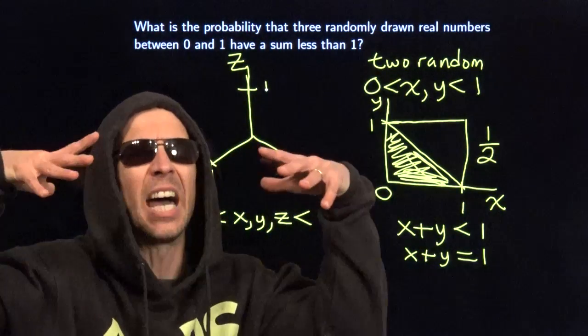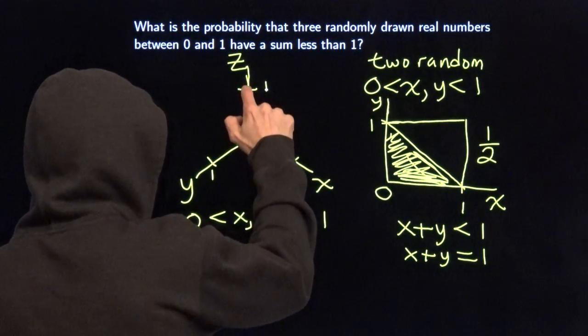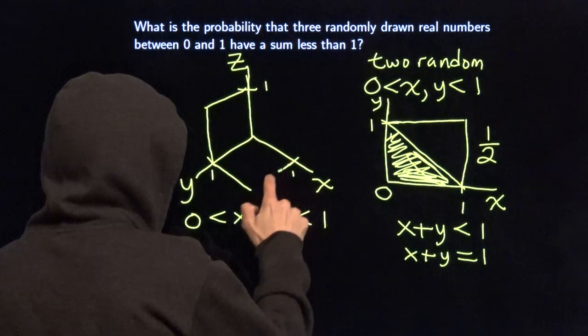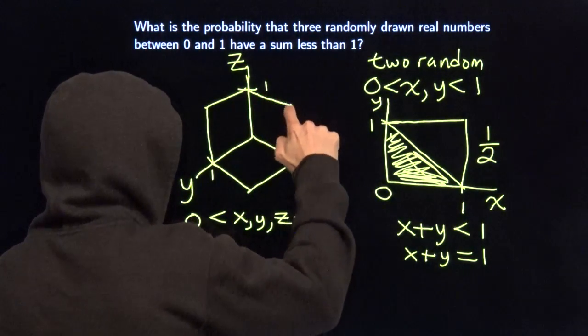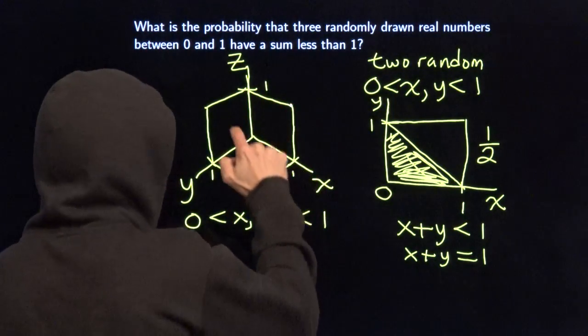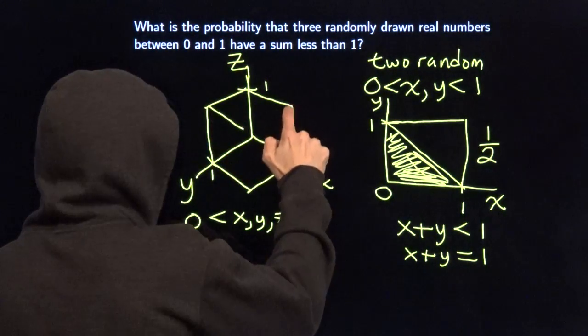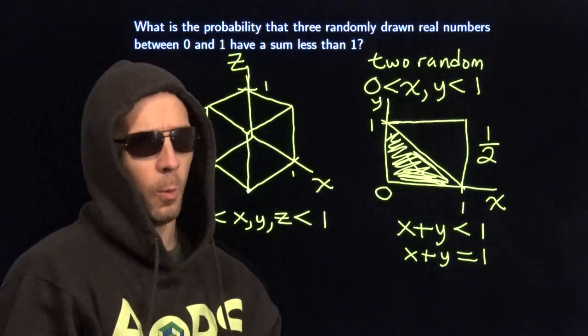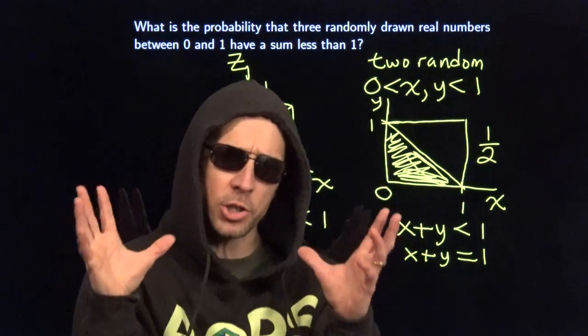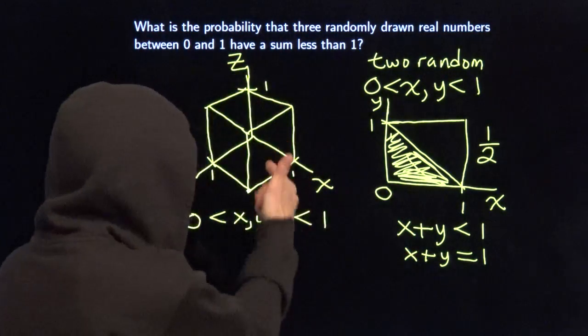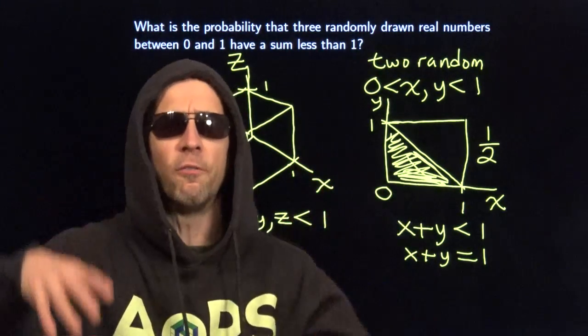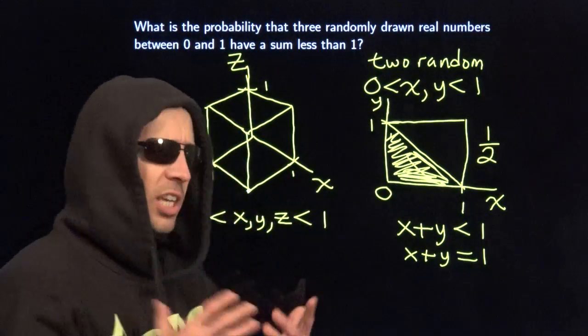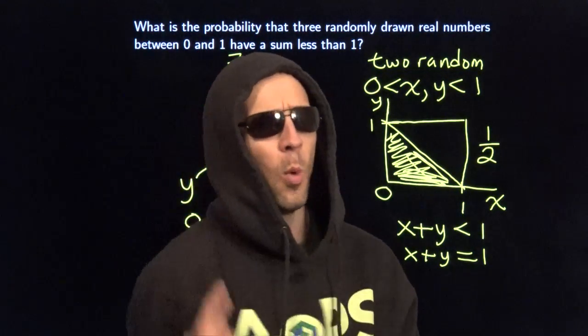Well over here we had a square. We're in 3D. Now we've got a cube. This is our possible region. This is the cube of all points for which X, Y, and Z are all between 0 and 1. Now over here we used area to measure our possible region. Here we're in 3D now. We're using volume. The volume of this cube, well all the sides, all the edges have length 1. The volume of that cube is 1.